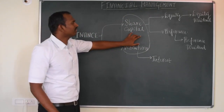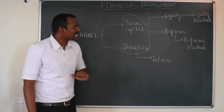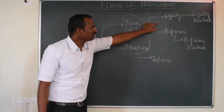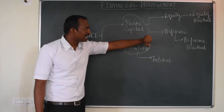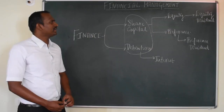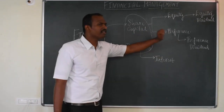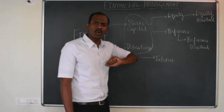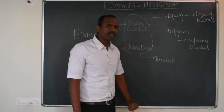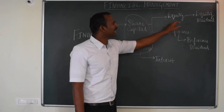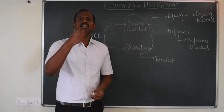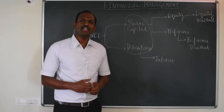Share capital is further classified into two major broad categories: equity share capital and preference share capital. The return on equity share capital is called equity dividend, and the return on preference share is called preference dividend. The rate of dividend is fixed in the case of preference dividend, whereas in the case of equity dividend the rate is not fixed — more the profits, more the dividend towards the equity shareholders.